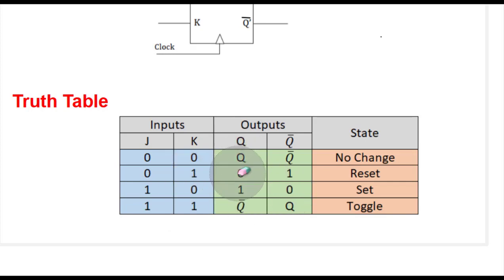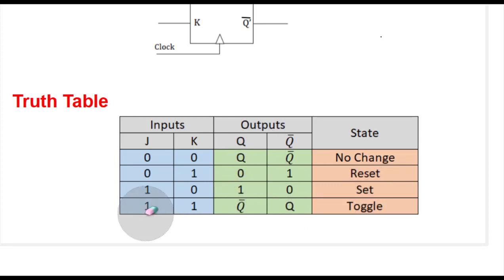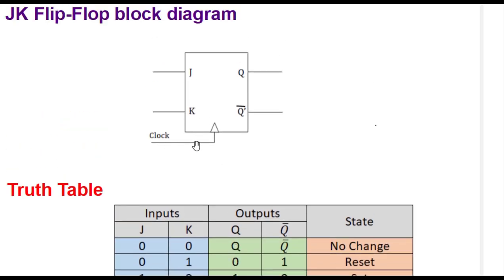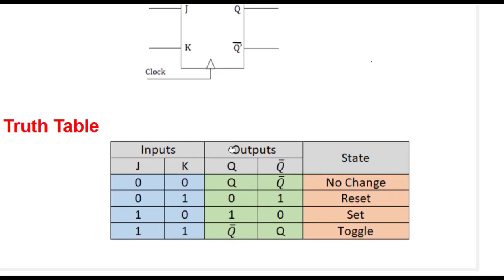For input zero-one, Q becomes zero - that is the reset state. When input is one-zero, output becomes one, meaning Q becomes one - that is the set state. When both inputs are one-one, the output toggles. Toggle means if the output was zero-one, it becomes one-zero, and if it was one-zero, it becomes zero-one. When we start the clock, the output will toggle with respect to every clock pulse, as we'll see in the simulation.